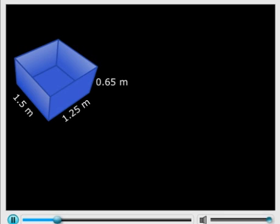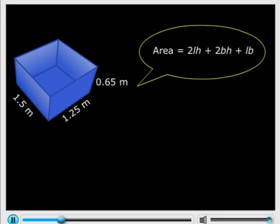So what is the area of the sheet? 2 into LH plus 2 into BH plus LB, not 2 into LB, just LB. Why? Because the top face is not to be there. It's an open box.